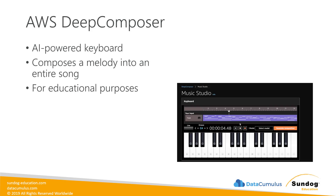One thing they announced is something called AWS Deep Composer. This is an actual keyboard that they give you that is AI powered. You can compose a short melody on this keyboard, and AWS Deep Composer will take that and build an entire song out of it automatically using AI. The applications in practical terms are kind of limited — it's really more of an educational tool to get people excited about AI using music, a gateway into getting involved in machine learning. That's all Deep Composer is.